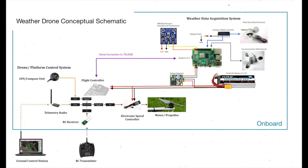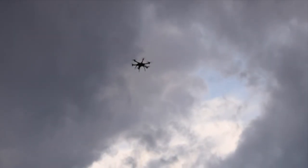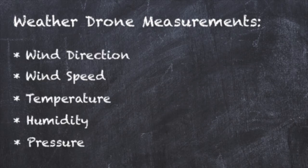The weather drone consists of a platform system that is responsible for navigation and flying, and a weather data acquisition system that collects and stores measurements during flight. With these systems, the drone is able to autonomously fly to different locations and collect weather data, including wind direction, wind speed, temperature, humidity, and pressure.